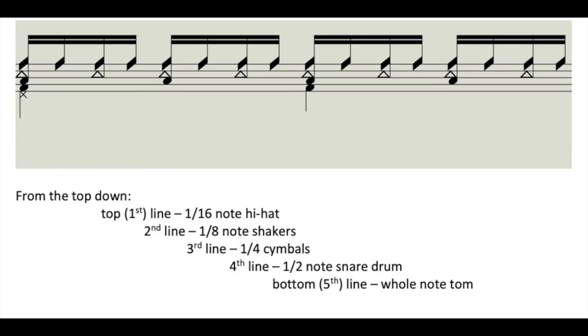In music terminology, this drum beat is playing at 120 beats per minute. The hi-hat is playing 16th notes, the shakers are playing 8th notes, the cymbal is playing quarter notes, the snare drum is playing half notes, and the tom is a whole note. Notice that the cymbal, at 2 times per second, gives us 120 beats per minute. So the quarter note is the beat. All of those divisors were powers of 2.